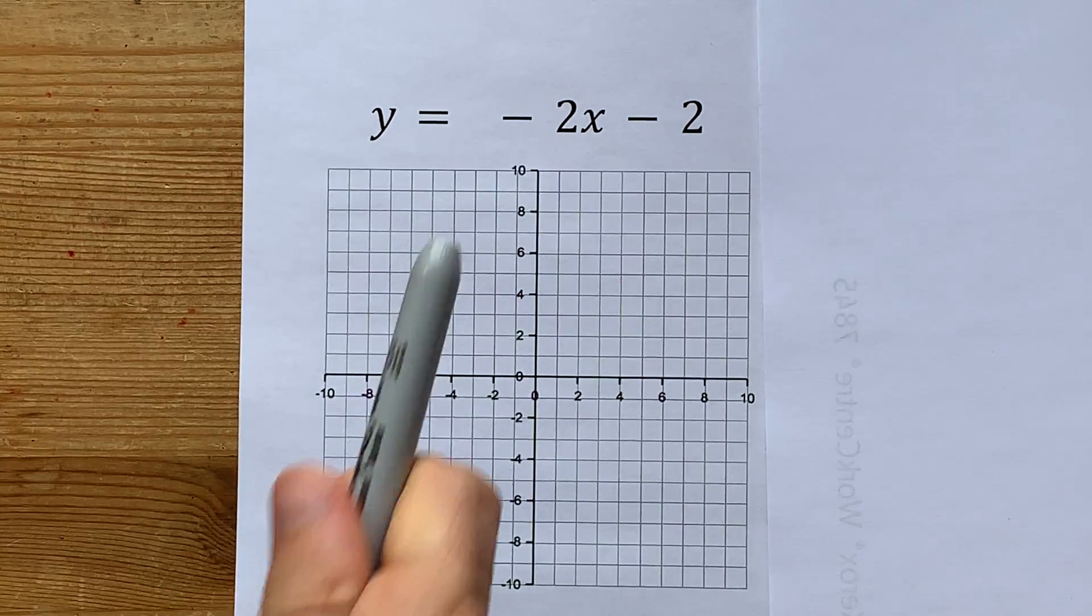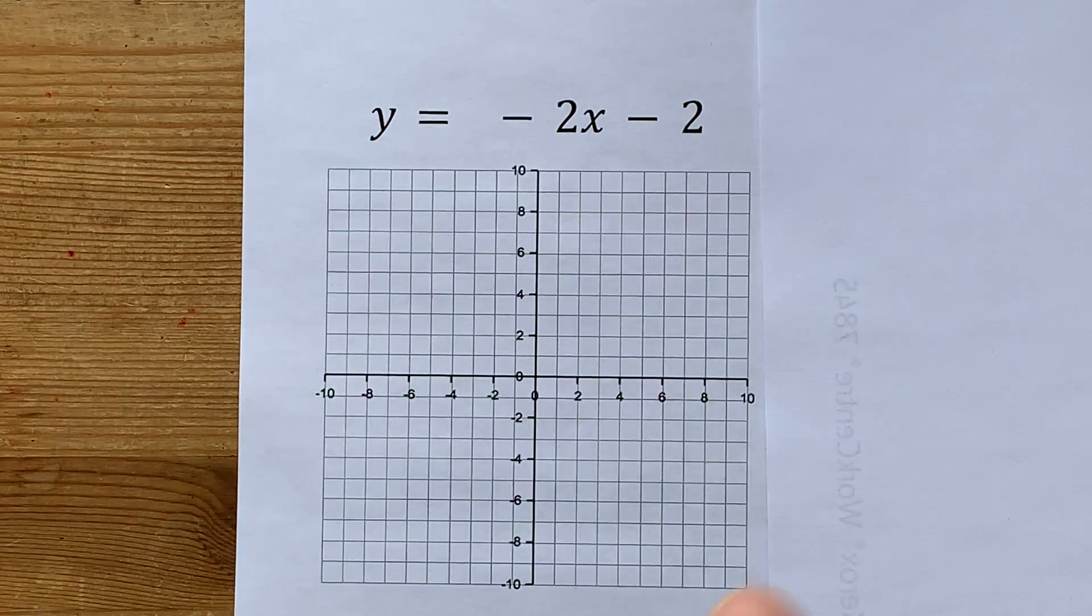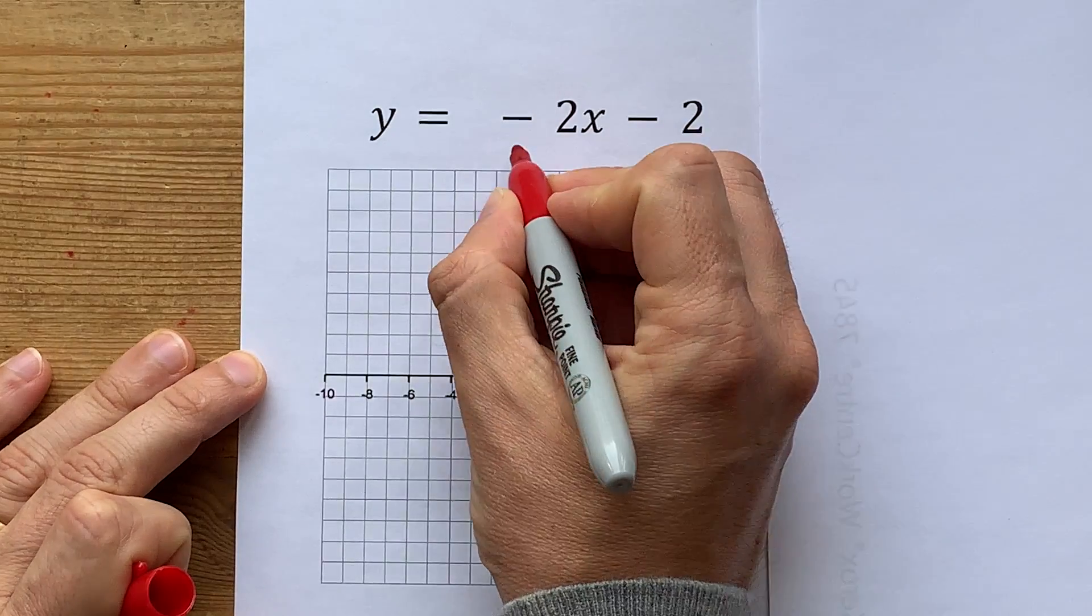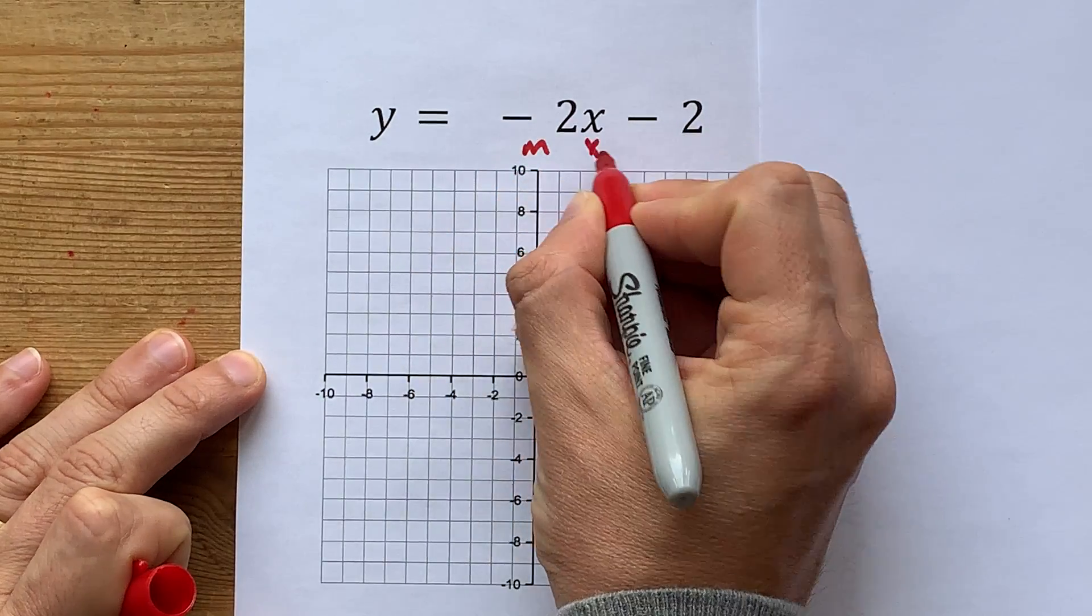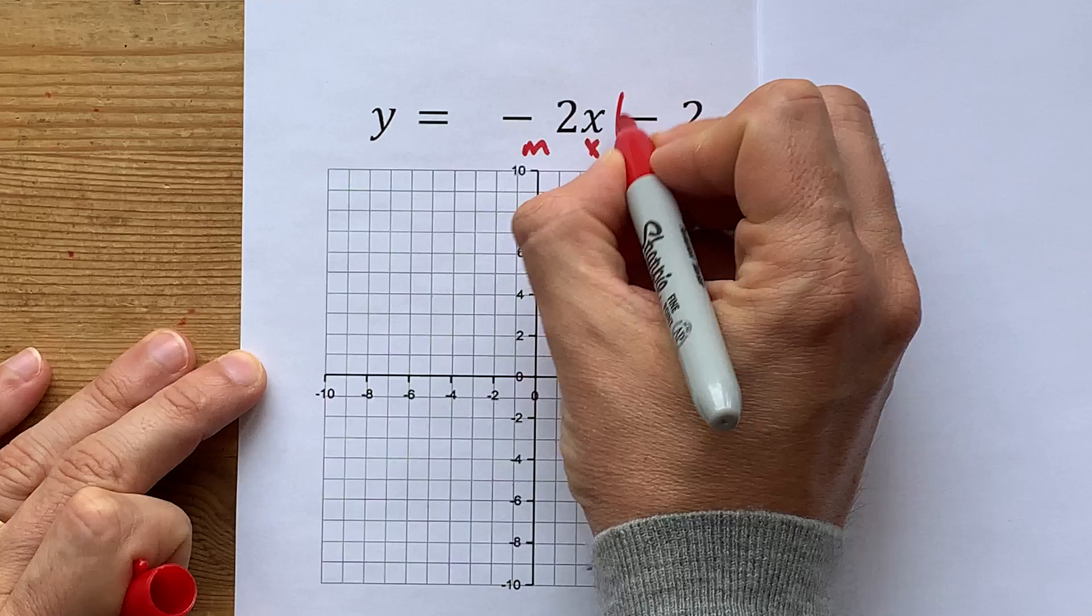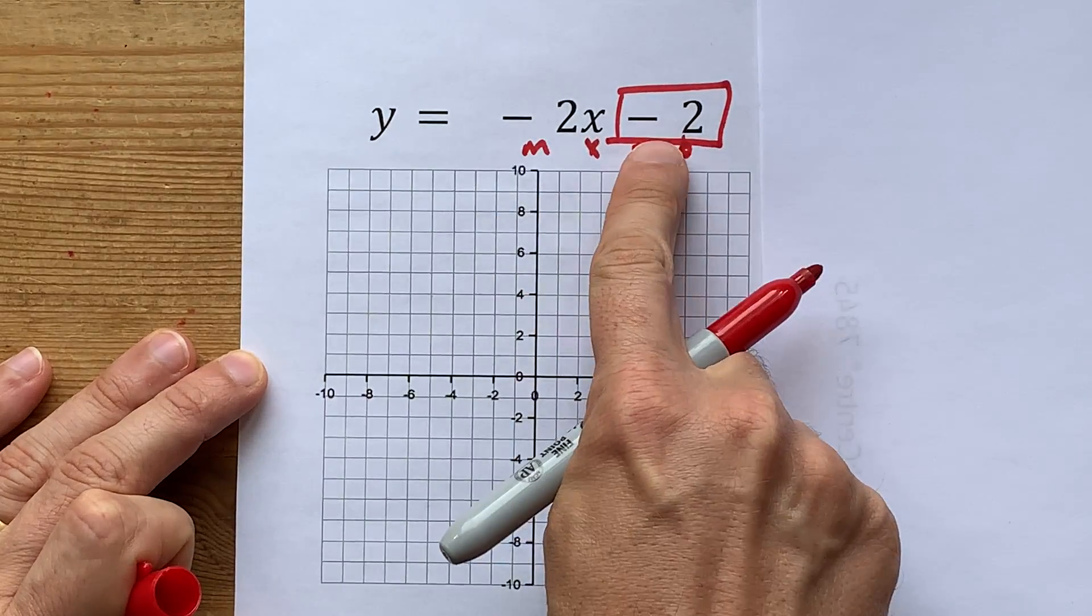You're being asked to graph y equals negative 2x minus 2. This is already in y equals mx plus b form, which means this number, the minus 2,